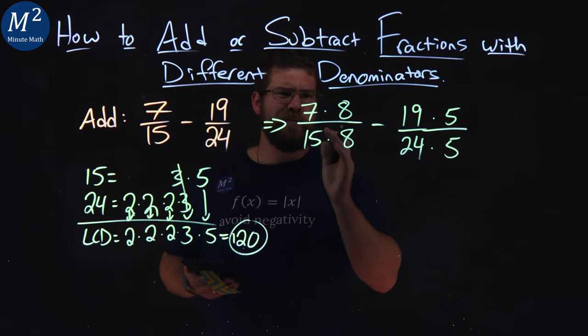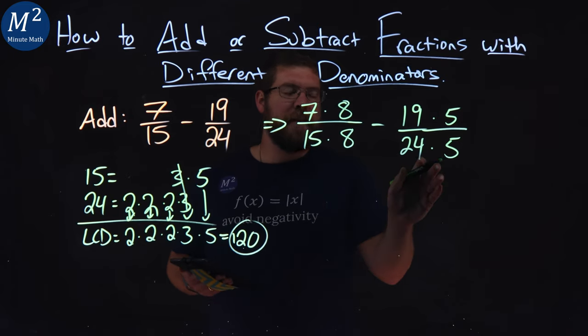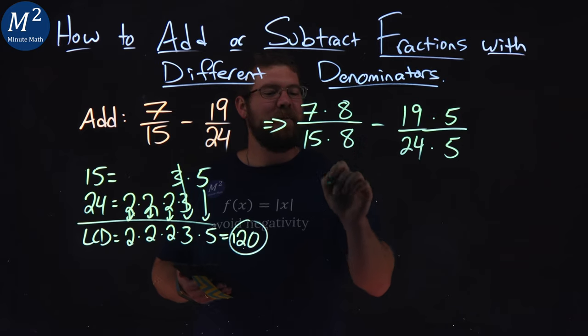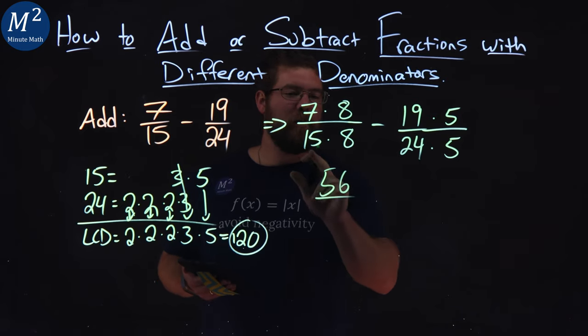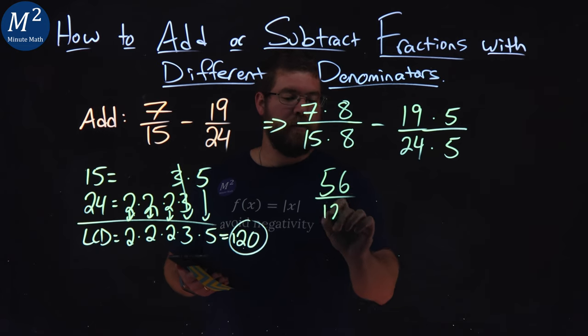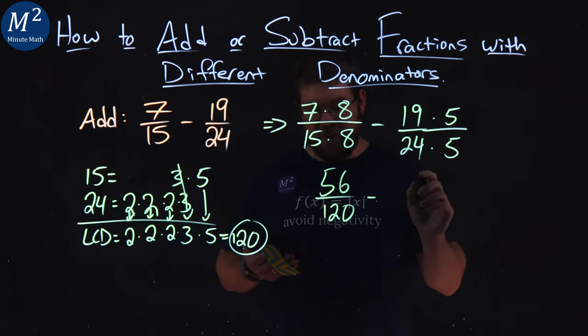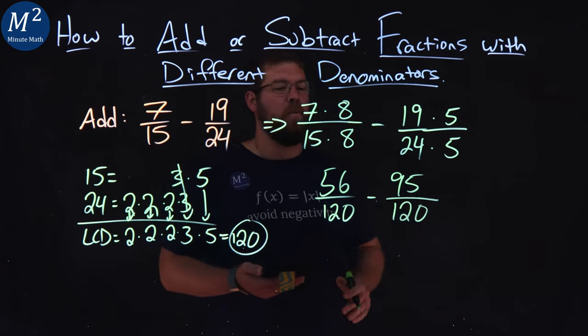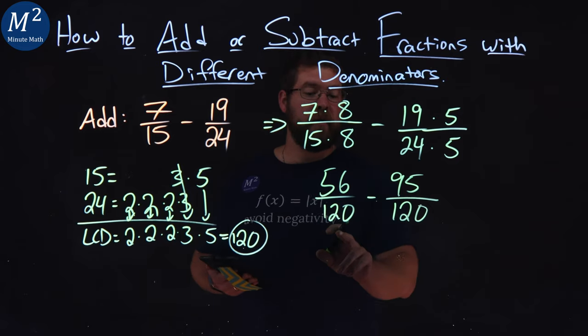From there, we want to see what the numerators are and then simplify each fraction. 7 times 8 is 56 over 15 times 8, which is 120. Minus 19 times 5 is 95 over 24 times 5 is 120. We now have this common denominator of 120.